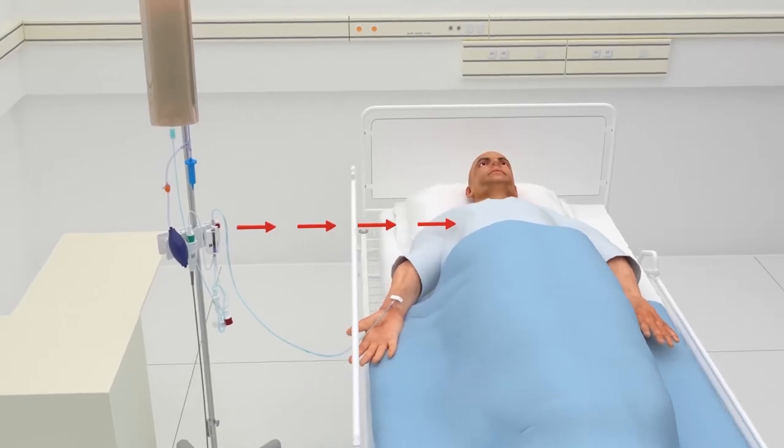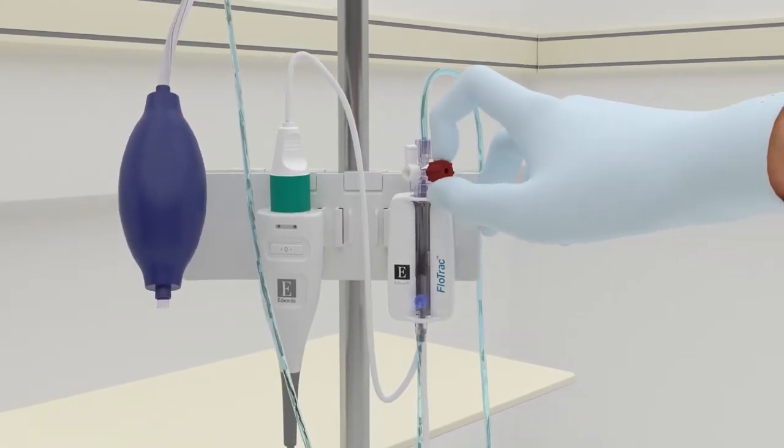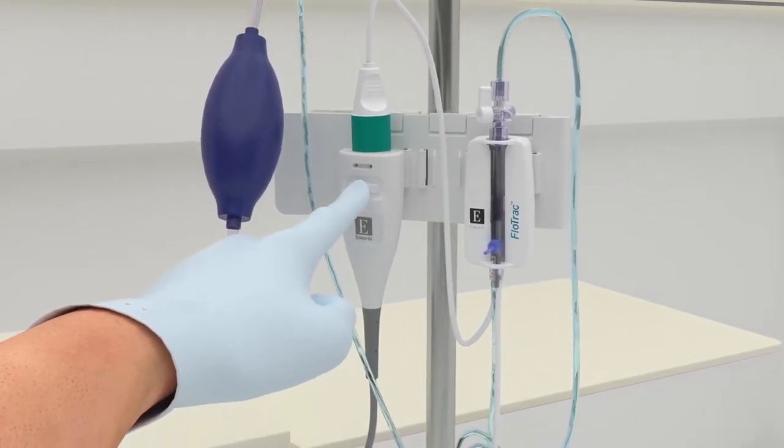Level the FlowTrack sensor to the phlebostatic axis. Open the FlowTrack sensor to atmospheric air. Hold down the zero button for three seconds to pull up the zero screen.